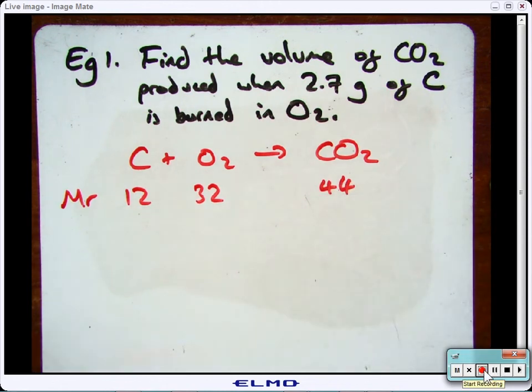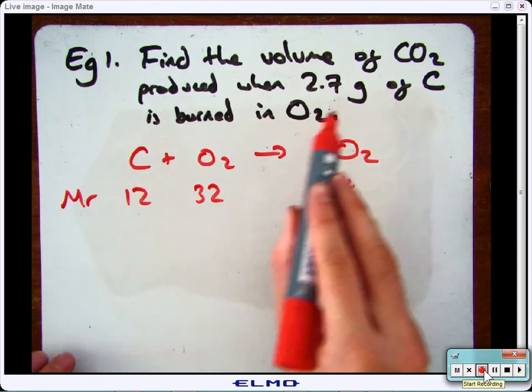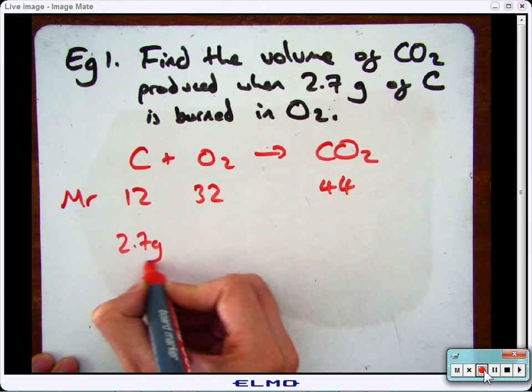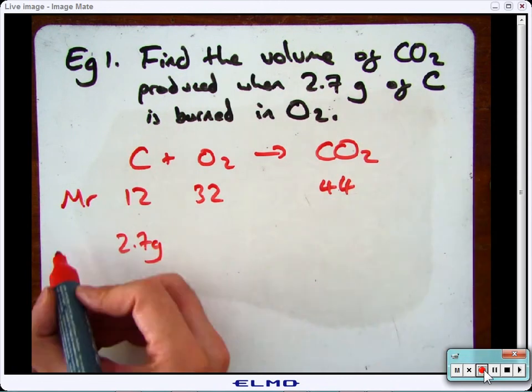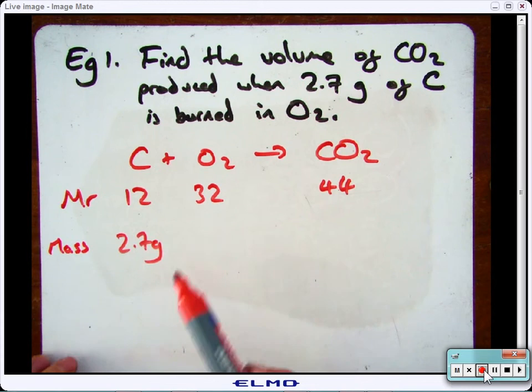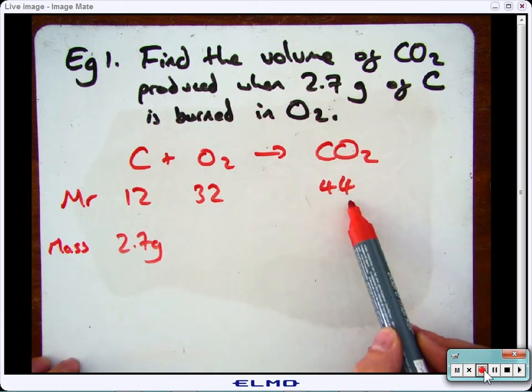The next thing you need to do is work out the molecular formula for each, then fill in the rest of the information that you know. So I know I've got 2.7 grams of carbon, and what I want to know is the volume of carbon dioxide.